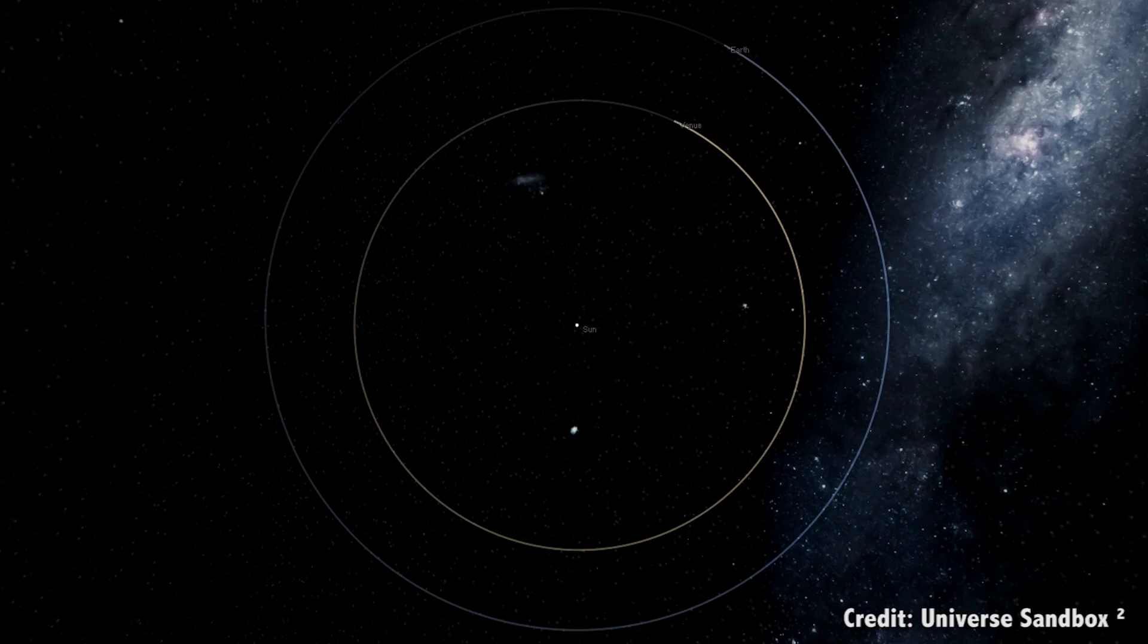So, here's a simplified version of the Solar System, with just the Earth, Venus, and the Sun. Earth, as you probably know, takes just over 365 days to go around the Sun,